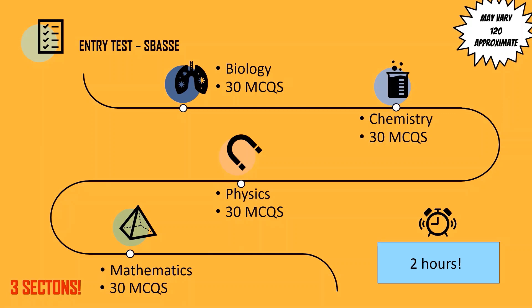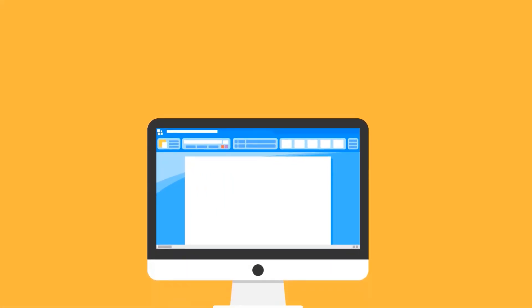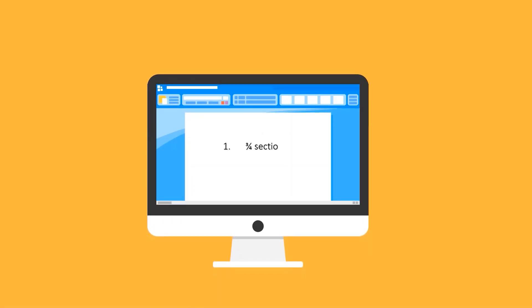What I mean by that is, it is a possibility that the physics section has only 25 MCQs and the biology section has almost even 39 MCQs. Moving on, there are some key points that you should know about the format. Remember that only 3 out of 4 sections have to be attempted.